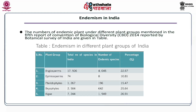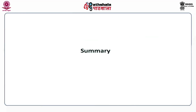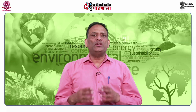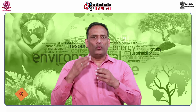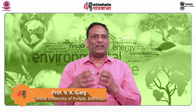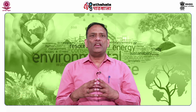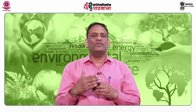In India, the total number of angiosperm species is 17,926, of which 22.57 percent are endemic. Similarly, in gymnosperms 10.81 percent are endemic, in pteridophytes 15.47 percent are endemic, in bryophytes 25.64 percent are endemic, and in algae 26.9 percent are endemic. To summarize this module, we have learnt what is endemism, what factors lead to endemism, what are different theories of endemism, and we have also learnt about endemism and endemic species of India. Thank you.